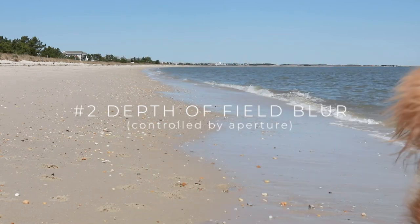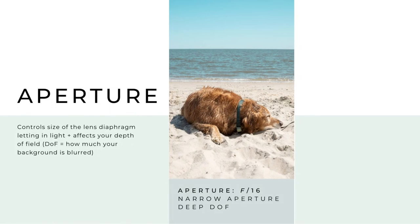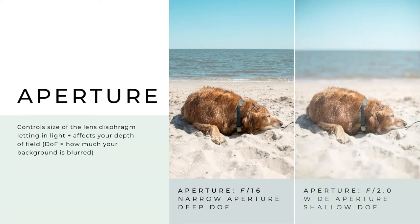Number two: depth of field blur. The second type of blur you may see in an image has to do with your depth of field, which is controlled by your aperture setting. This is typically a desirable blur. Have you ever wondered how photographers get that creamy bokeh or blurred-out background effect? Your aperture setting can create the bokeh because it is responsible for the depth of field in your image. Aperture controls the size of the opening in your lens that is letting in light, and it functions a lot like your own pupil. The narrower an aperture you use, the deeper your depth of field will be and the further you can see into your image. The wider your aperture is open, the shallower your depth of field is, and the more bokeh or background blur is created.